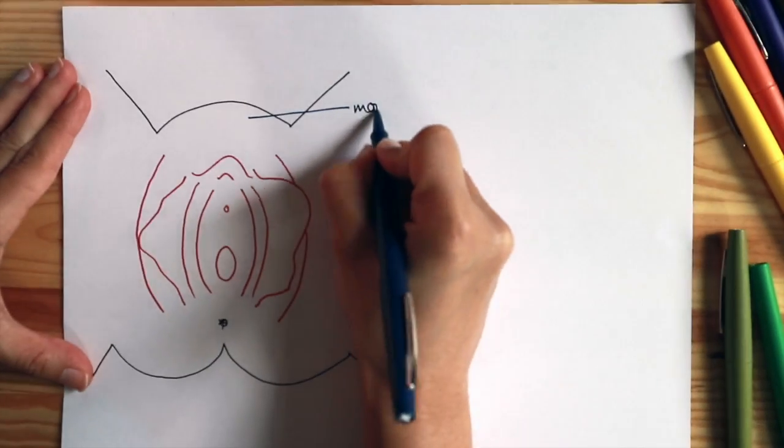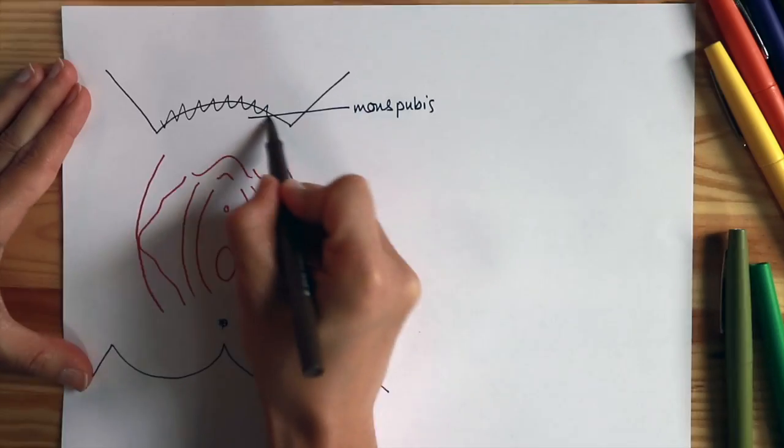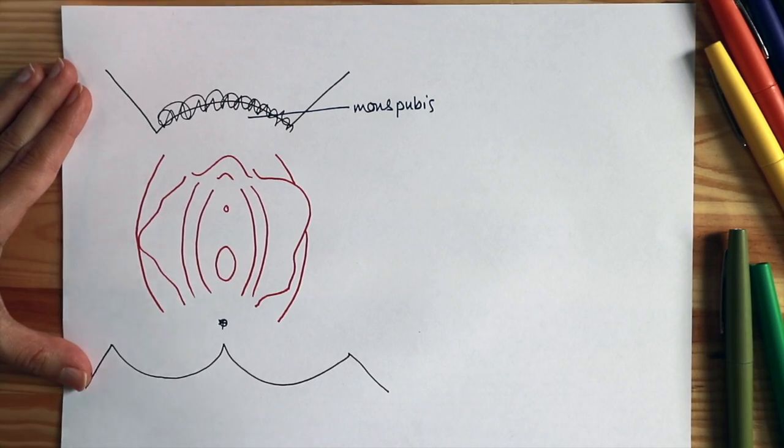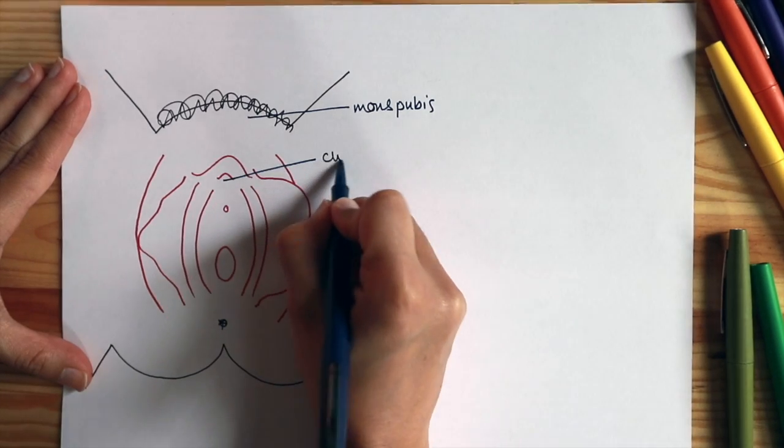So I'm drawing a lady lying with her legs open towards us. The area here is a little bit fuzzy, but it actually can be because this is the mons pubis where your pubic hair grows if you haven't shaved it off or ripped it out.